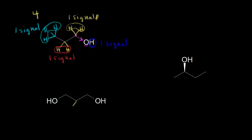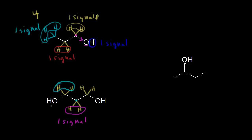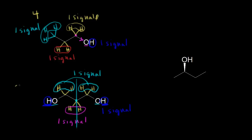Let's look at this alcohol. Symmetry helps here. The two central protons are between two CH2 groups, so they're chemically equivalent — one signal. The protons on the next carbons are each next to a CH2 and next to an OH, which is the exact same environment on both sides by symmetry, so we'd expect only one signal for those four protons. And the proton on the oxygen — by symmetry, there are two equivalent OH protons — so one signal there. A total of three expected signals for this molecule.